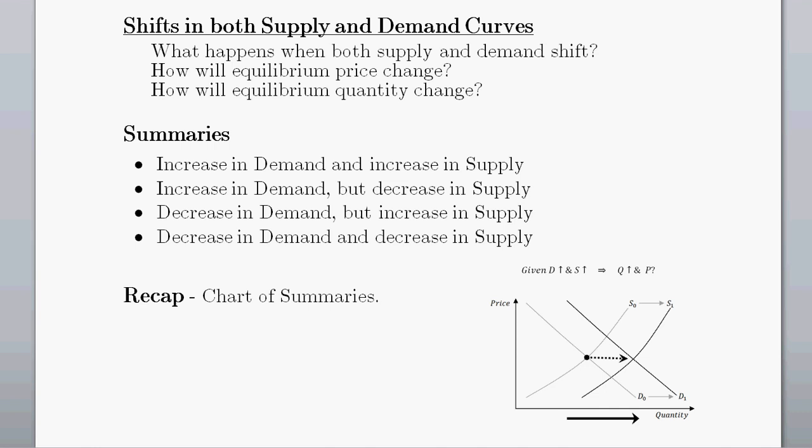In this video we're going to talk about shifts in both the supply and the demand curves. What happens when we get a simultaneous shift in supply and demand? We could change them both at the same time — for example, an increase in supply and an increase in demand. What can we say about the equilibrium price change and the equilibrium quantity change?